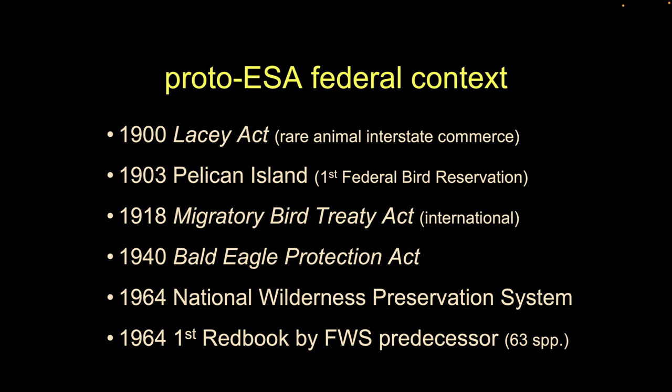We then get our first piece of land set aside by the federal government specifically for the protection of rare critters — Pelican Island in 1903. The next big thing is the 1918 Migratory Bird Treaty Act, which covers birds that fly between Mexico, the United States, and/or Canada. If a bird's migratory path crosses more than one of those countries, it's listed as a species under the Migratory Bird Treaty Act and gains extra protection.